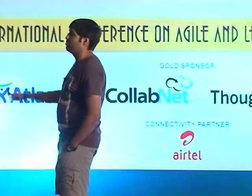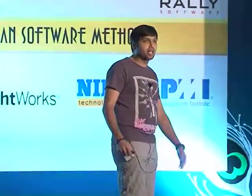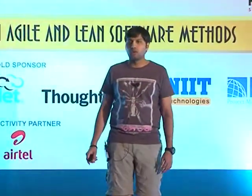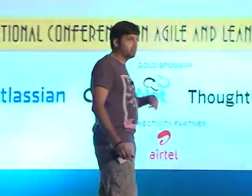On the top we have business facing and on the bottom we have technology slash implementation facing. On the left we have supports programming — these set of tests help programming, help the developers, help the team drive the development. And the tests on the right critique the product. These are the kind of tests which, after the fact, once a piece of code is written, it validates whether it is actually doing what you want it to do. You should be able to take any test and put it in one of these four quadrants and understand why it fits there and what is its purpose.